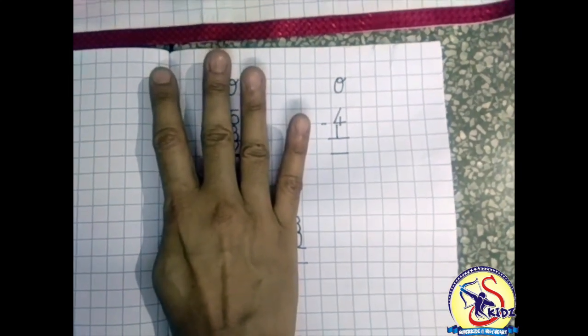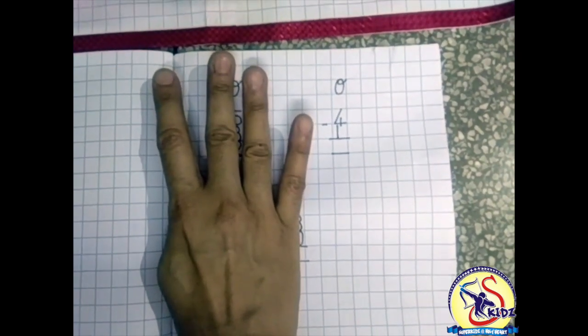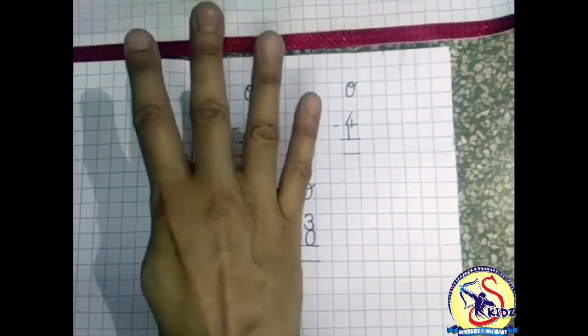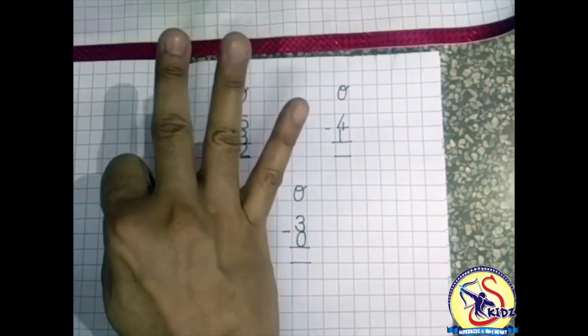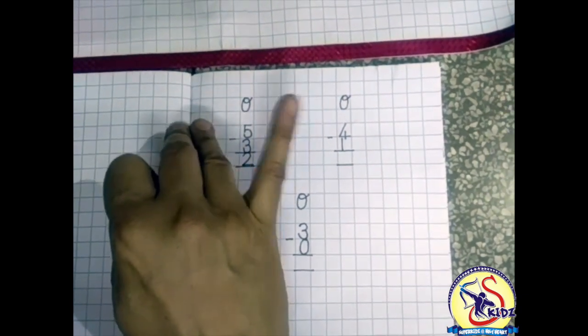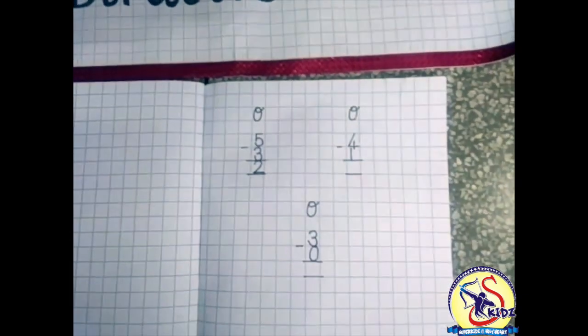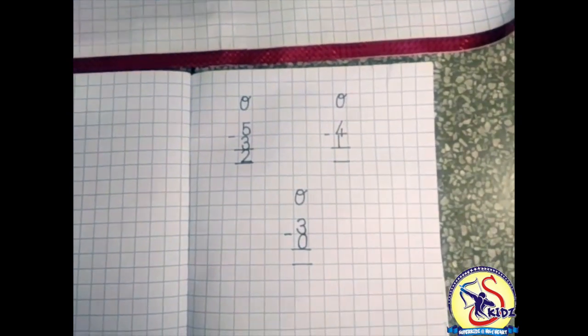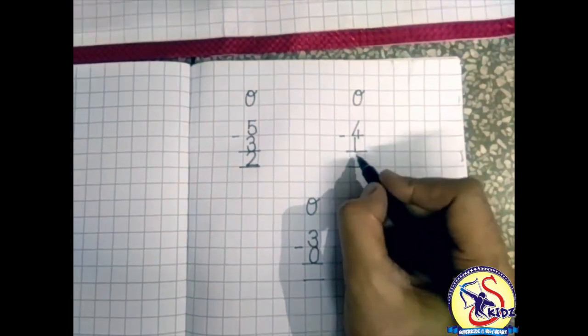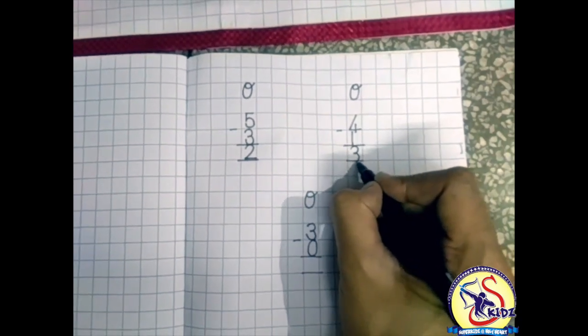Now the next number is one. Four fingers up, one finger down. So we will close one finger, then count the fingers: one, two, three. So how many fingers left? Three fingers. So four minus one is equals to three.